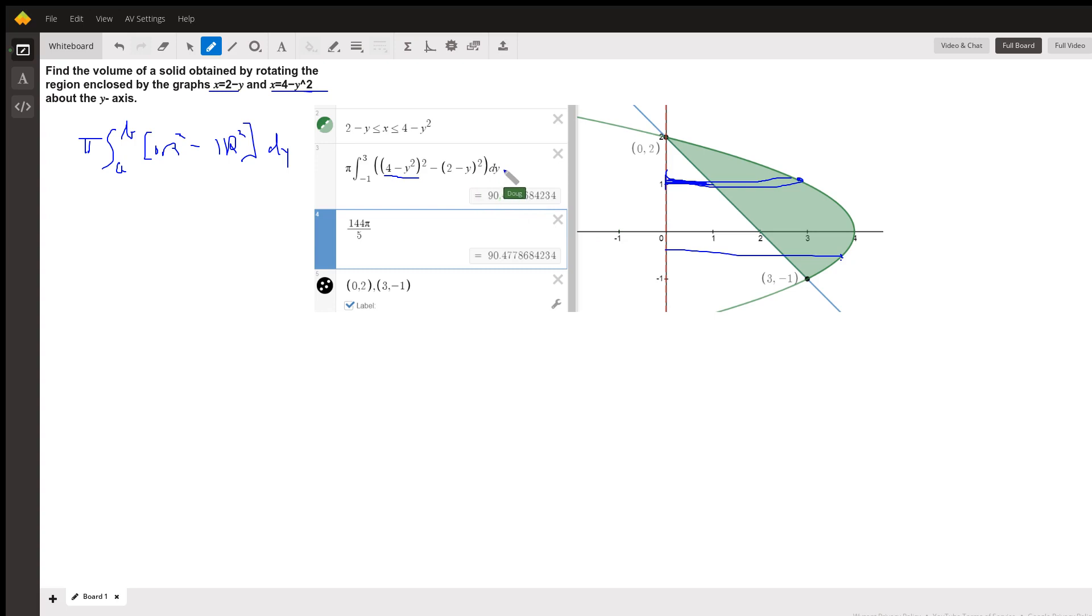So there's the inner radius squared. We're integrating along the y-axis from negative 1 to 3. This looks like the exact answer. The question is, how did I get that from this? This is setting up the integral.